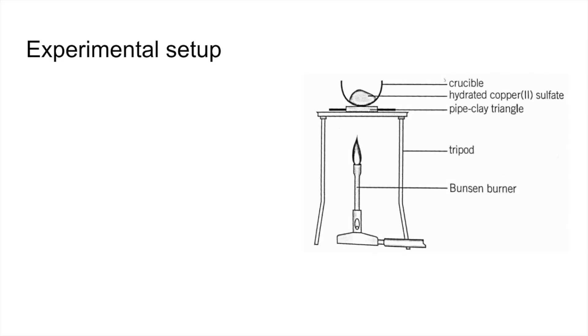We'll just quickly look at the typical experimental setup to determine the formula of a hydrated salt. Typically you'd use apparatus like that, where you'd have your hydrated salt in a crucible, and you'd heat it with a Bunsen burner and obviously drive the water molecules out.